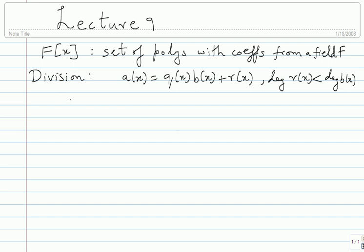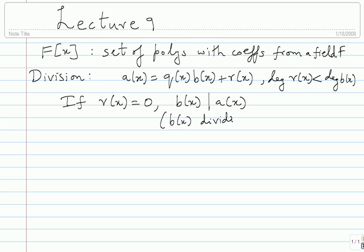If the remainder r(x) is 0, we say b(x) divides a(x) — shorthand: b(x) | a(x). Then a(x) is a multiple of b(x). There is also the notion of divisors: if you can find some polynomial b(x) that divides a(x), then b(x) is a divisor of a(x). Based on that you can determine whether divisors exist for any polynomial.